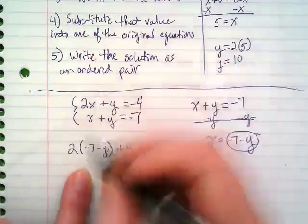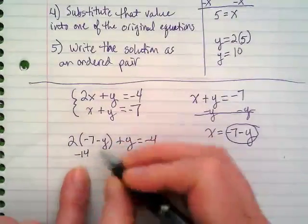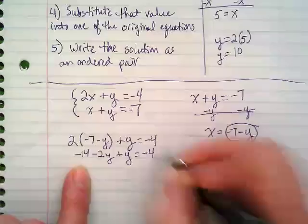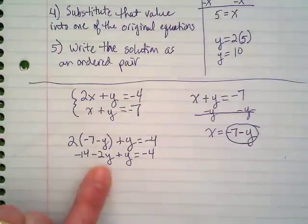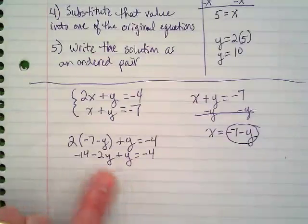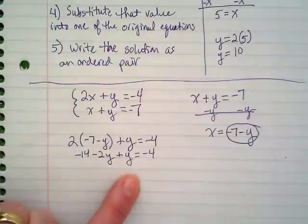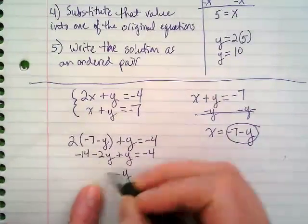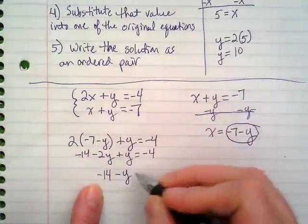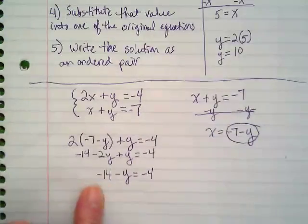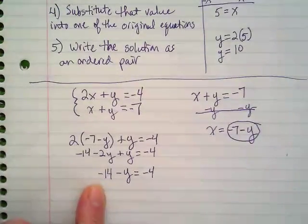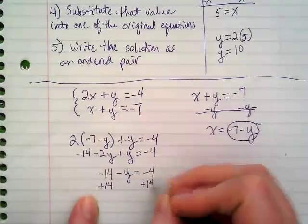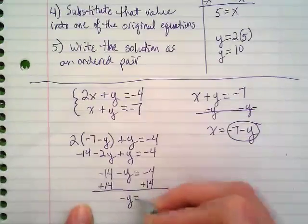What's 2 times negative 7? Negative 14. And 2 times negative y is going to be negative 2y, plus y equals negative 4. I have to combine like terms here. I have negative 2y and positive y, so that's going to end up being negative y. I'm going to skip down the line because my y's have long tails. Negative 14 minus y equals negative 4. I'm going to move the negative 14 to the other side. Negative y equals positive 10.